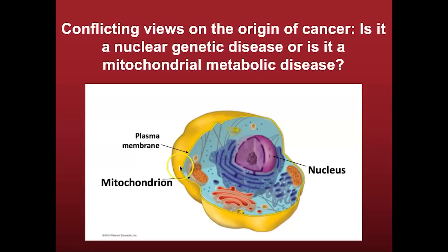These little bean-shaped organelles are the mitochondria, and the little squiggly material inside are cristae. They are responsible for the generation of energy through oxidative phosphorylation.